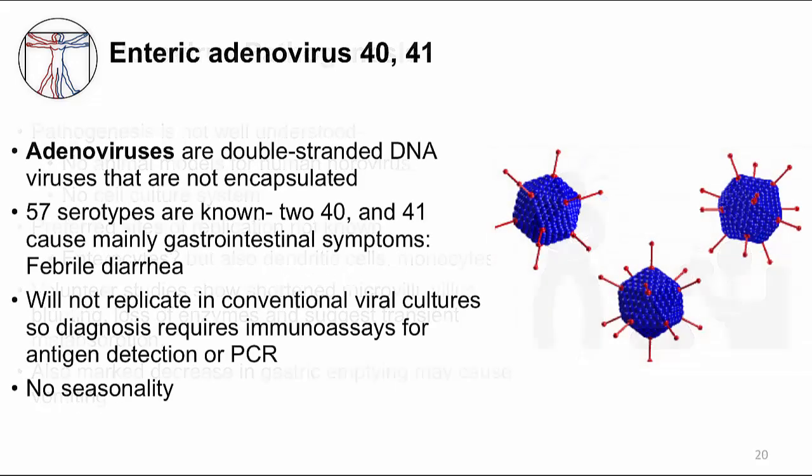Enteric adenoviruses are the next virus to discuss. Adenoviruses are a large group of viruses that cause many types of diseases, including pharyngitis, hepatitis, and pneumonia. However, of the 57 adenoviruses that cause disease in humans, only two cause acute gastroenteritis. Adenoviruses cause more prolonged diarrhea compared to norovirus and rotavirus. Unlike the other viruses discussed, adenovirus has a DNA genome and occurs in any season. Adenoviruses cannot be isolated by culture, so immunoassays or PCR are necessary for detection.